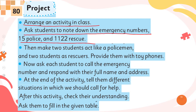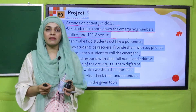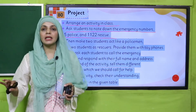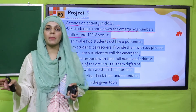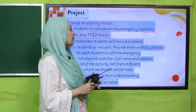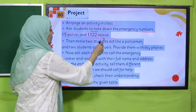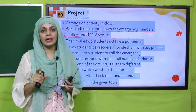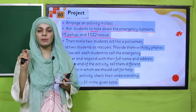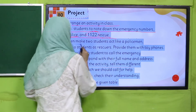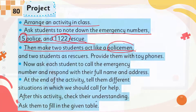Dear teachers, first you have to arrange all the props that will be mentioned, and prepare the students in advance. Two students will act as policemen, and the rest of the class will behave accordingly. On the board, write the emergency numbers in large letters: 1-1-2 is the rescue number and 1-5 is the police number, so students can memorize them. Then take two students to act as policemen and two as rescuers.